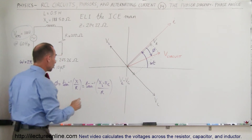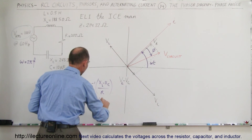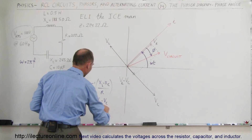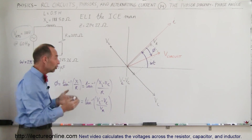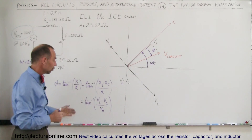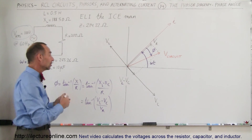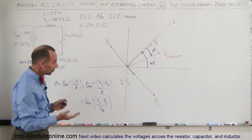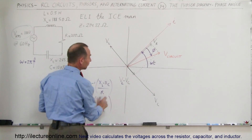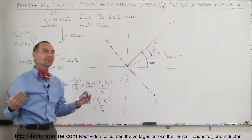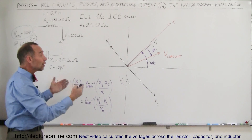In the same way, we can use the equation that the phase angle is also equal to the arctangent of V sub L minus V sub C divided by V sub R, because the voltages are directly proportional to the reactances and the resistance of the three components. So we can find the phase angle in the exact same way by using voltages rather than reactances and resistance. Since V sub L is smaller than V sub C, that will be a negative number, giving a negative phase angle — meaning the voltage lags the current.